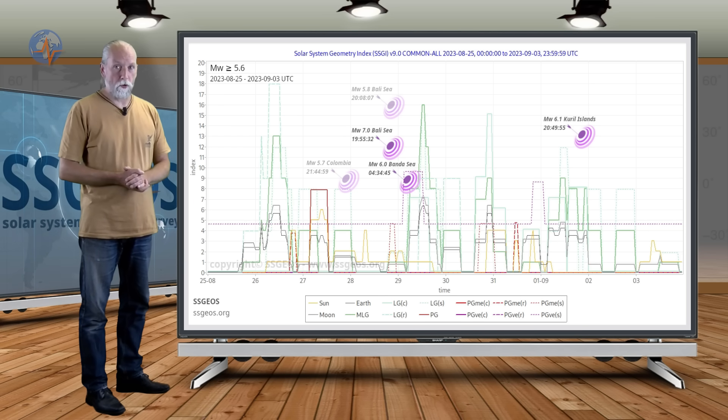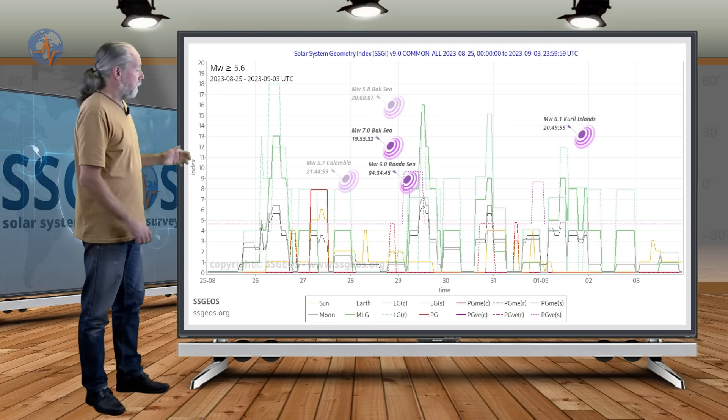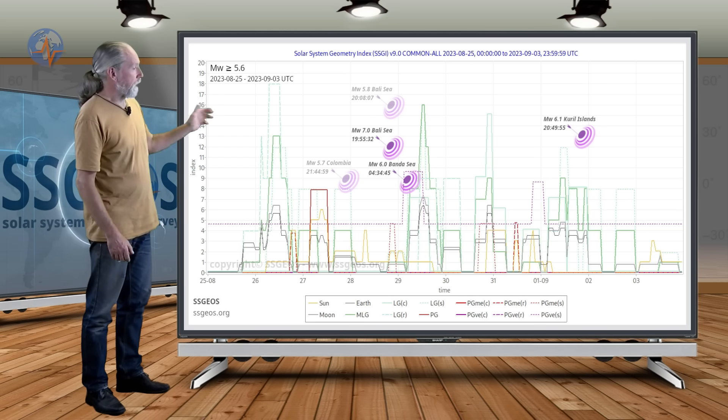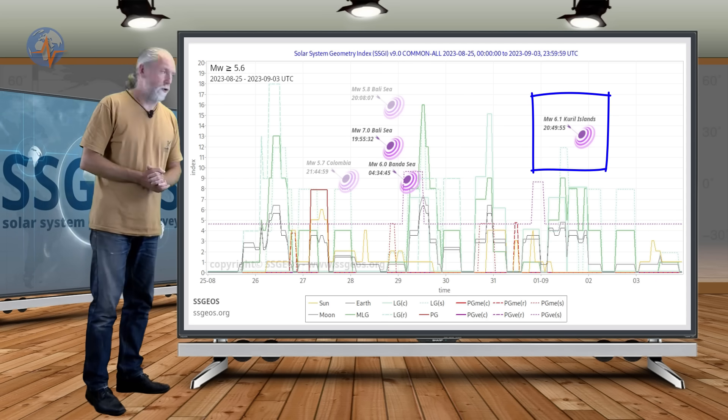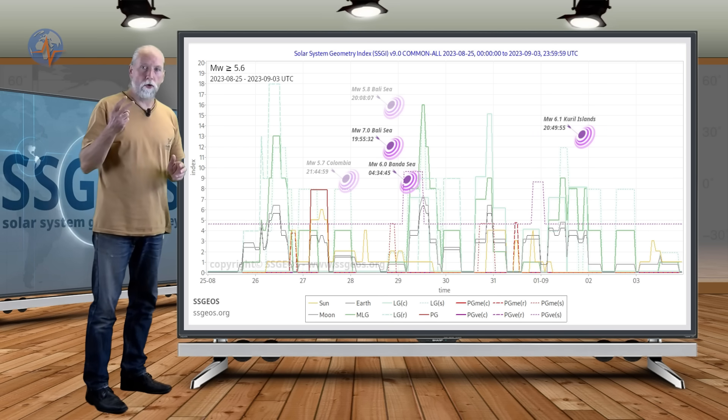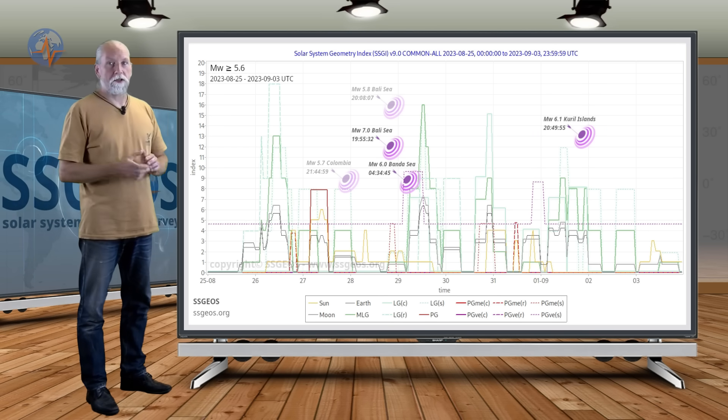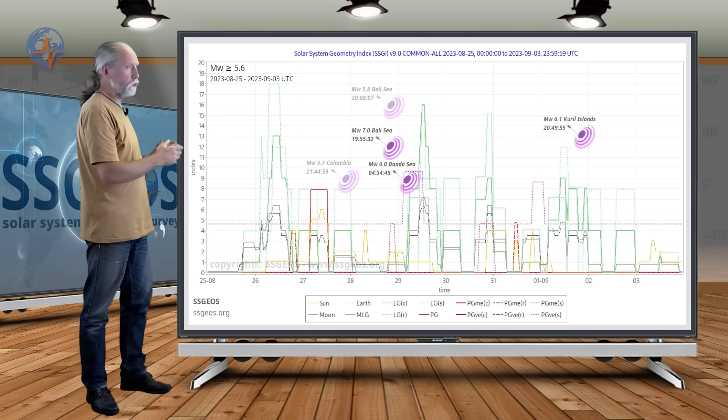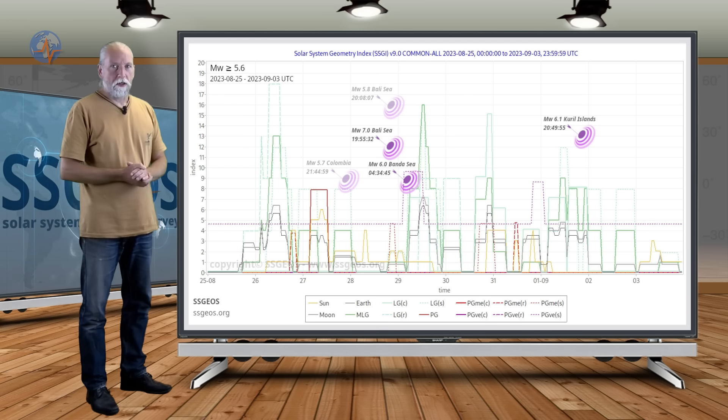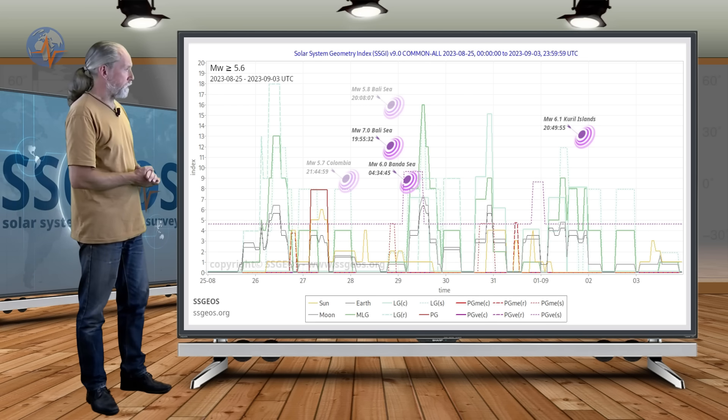On September 1st, a magnitude 6.1 earthquake occurred at the Kuril Islands. That followed the two lunar conjunctions with Mars and Neptune. Other than that, there was no stronger seismic activity, no magnitude 5.6 or larger earthquake.